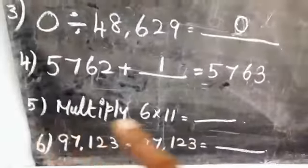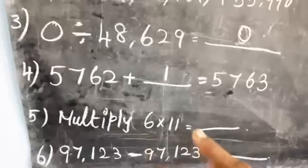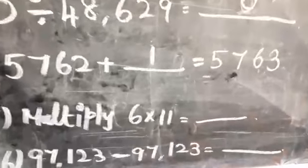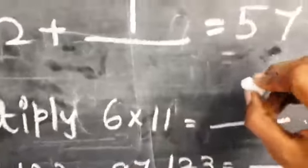Now look at the fifth one: multiply 6 × 11. The answer is 66.